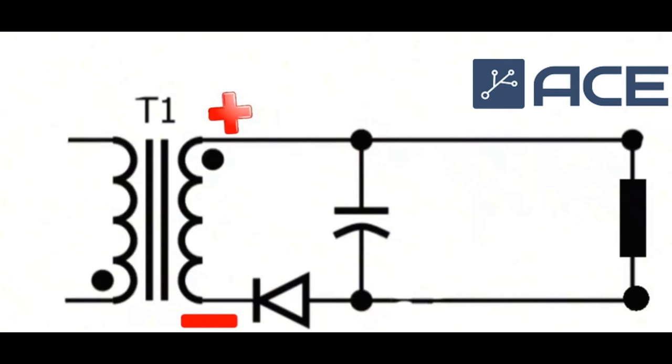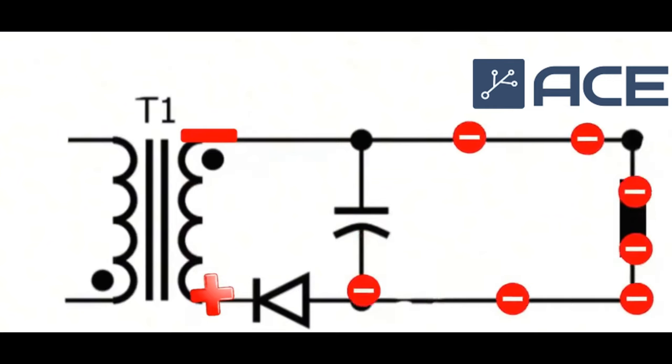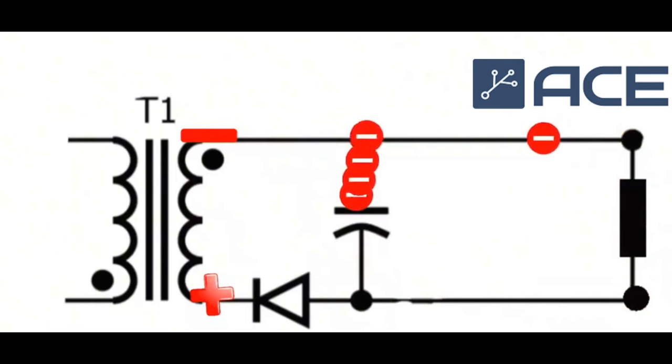If induced electromotive force is negative at top and positive at bottom, the diode does not conduct. Electrons in the inductor cannot form a complete circuit. When many electrons at the bottom of the capacitor flow back to the top through the resistor, electrons in the capacitor return to their starting point, and energy stored in the capacitor is released through the resistor.